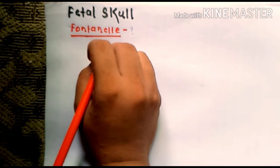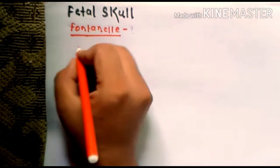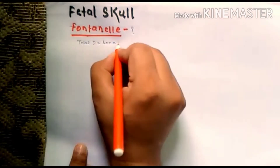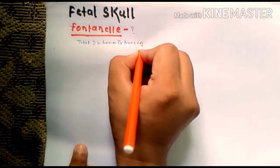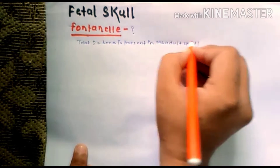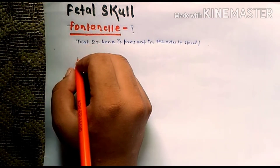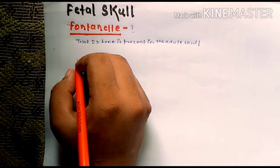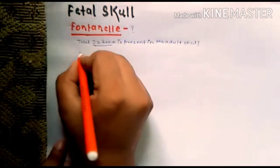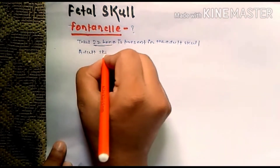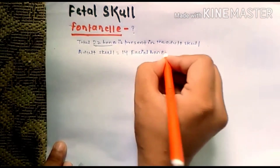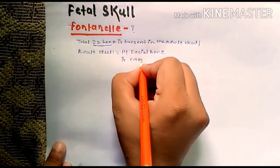First, we need to know about the sutures of the fetal skull. In the adult skull there are a total of 22 bones present. The fetal skull has comparatively fewer bones. In the adult skull there are 8 cranial bones and 14 facial bones.